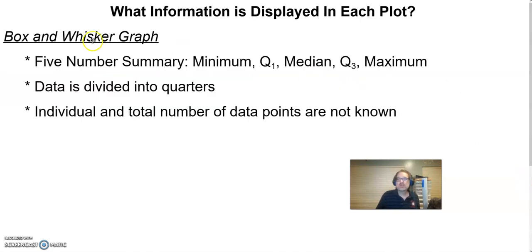So our box and whisker graph, this is the first one we learned. Remember this one tells us our five number summary, which is the minimum, the first quartile, the median, the third quartile, and the maximum value. Our data will always be divided into groups of four, they're divided into quarters, and I do not know individual data values.